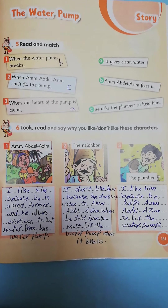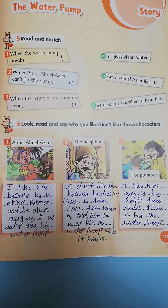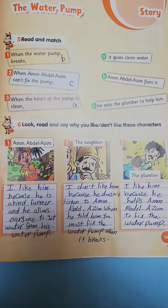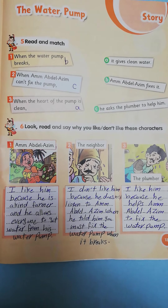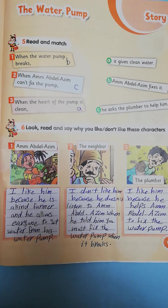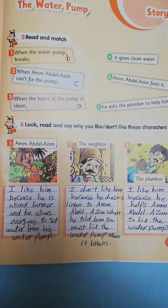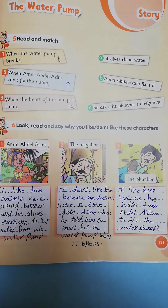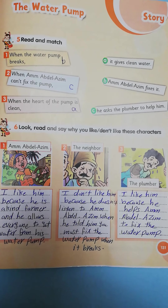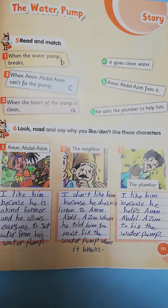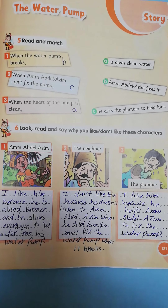Exercise 6: Look, read, and say why you like or don't like these characters. Number 1: Am Abdel Azeem — do you like him? Yes, of course I like him. Why? Because he is a kind farmer and he allows everyone to get water from his water pump. Number 2: The neighbor — do you like the neighbor? No, I don't like him. Why? Because he doesn't listen to Am Abdel Azeem when he told him you must fix the water pump when it breaks.